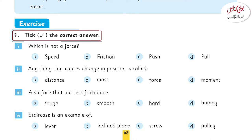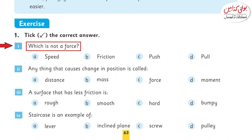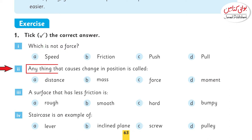Question number 1 is: which is not a force? Your options are speed, friction, push, and pull. As we have studied, push and pull is a type of force, friction is also a type of force, so the correct answer is speed.